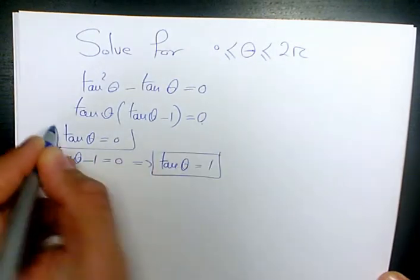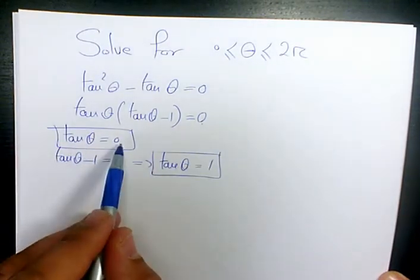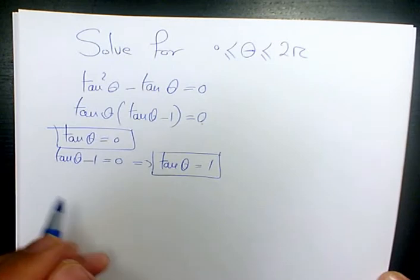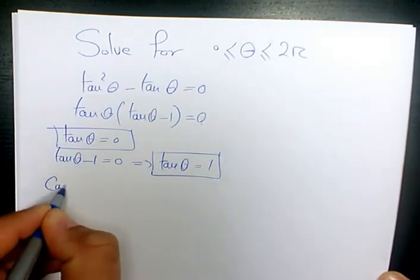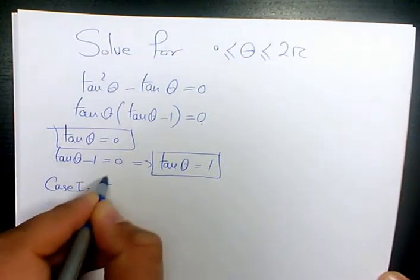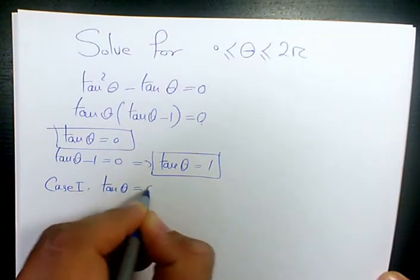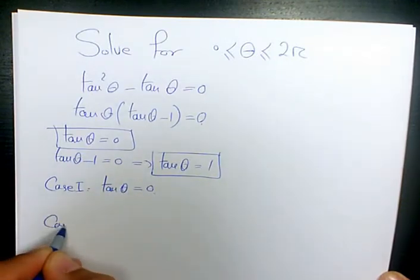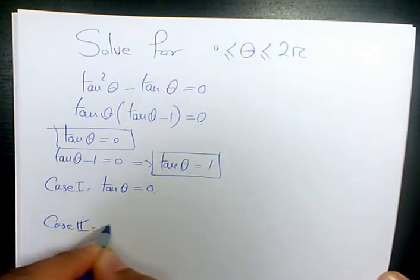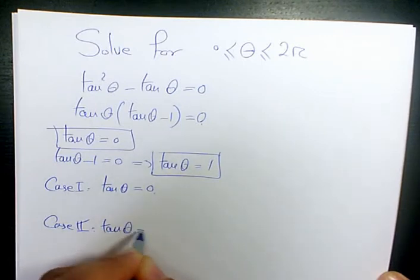So we have two cases, when tan theta equals to zero and when tan theta equals to one. Case one is going to be when tan theta is zero and case two when tan theta is positive one.